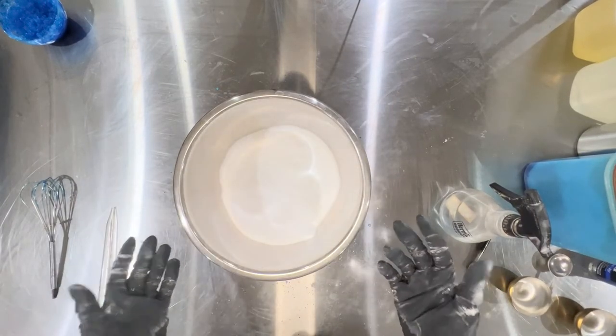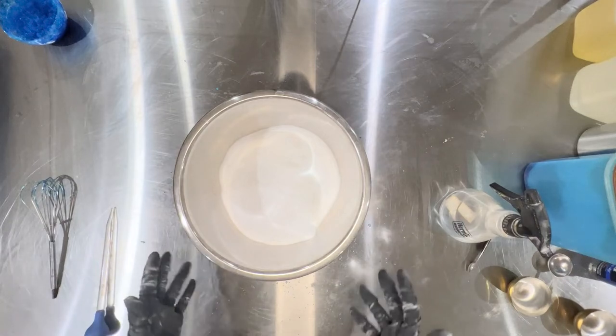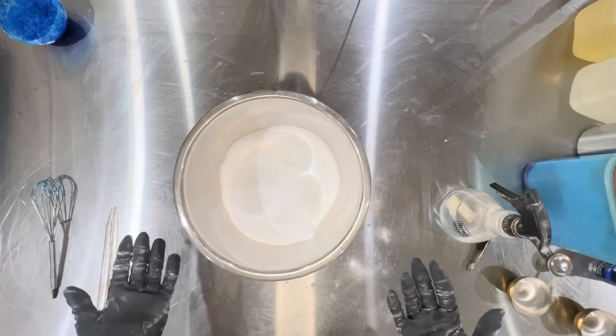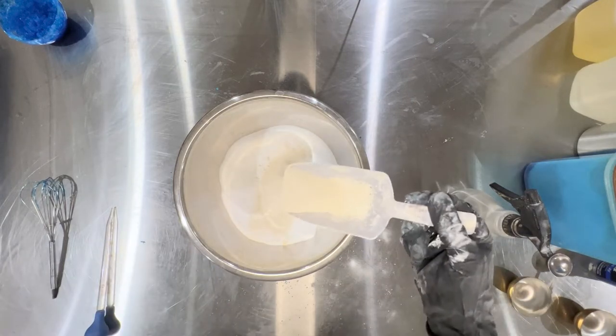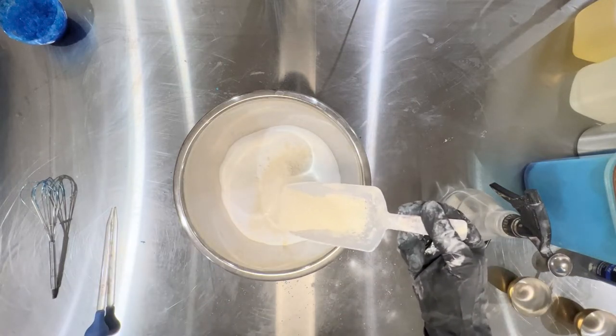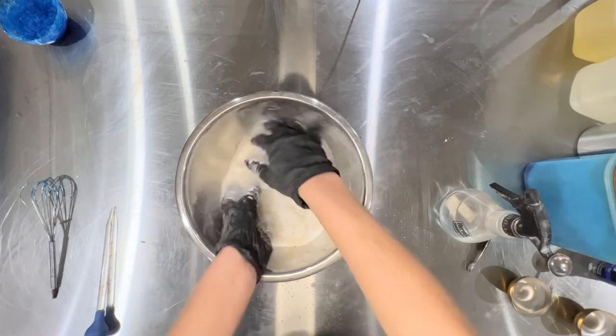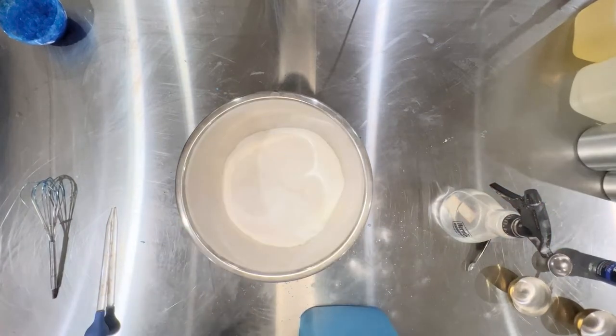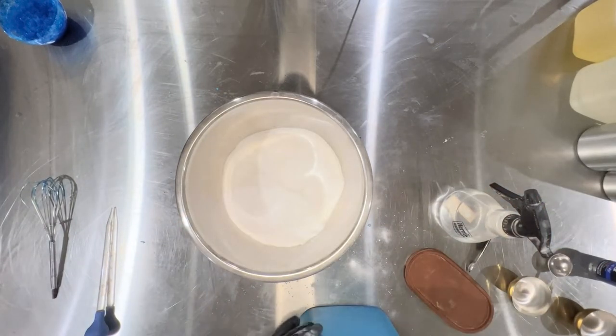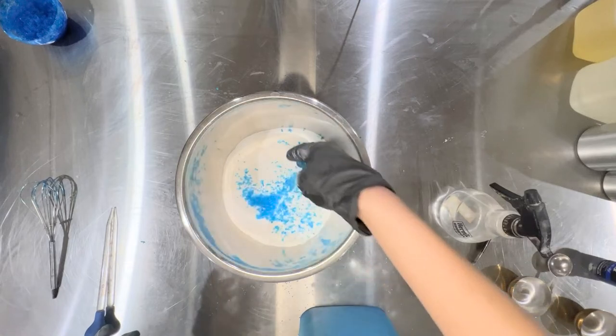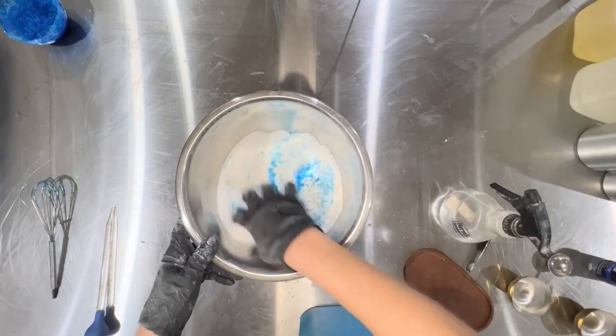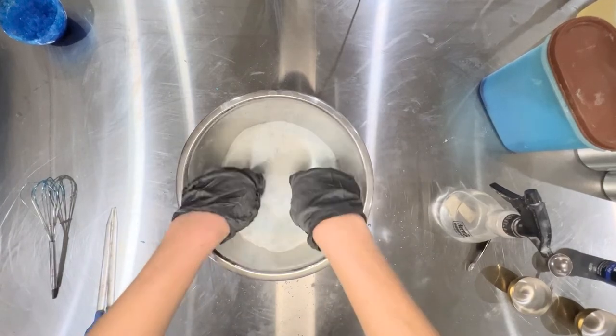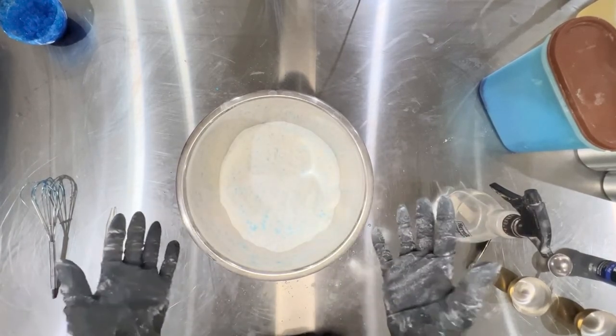Next ingredient is going to be kaolin clay. I like using this because it helps keep the structure of the bath bomb a little bit. It helps dry a little bit faster. Let's do eight grams of kaolin clay. Let's go ahead and mix that in. So now we are going to add a little bit of pre-dyed Epsom salt to the batch. And how much you want to add is up to you. All right. Let's put our dry powders aside and let's get to the liquids.